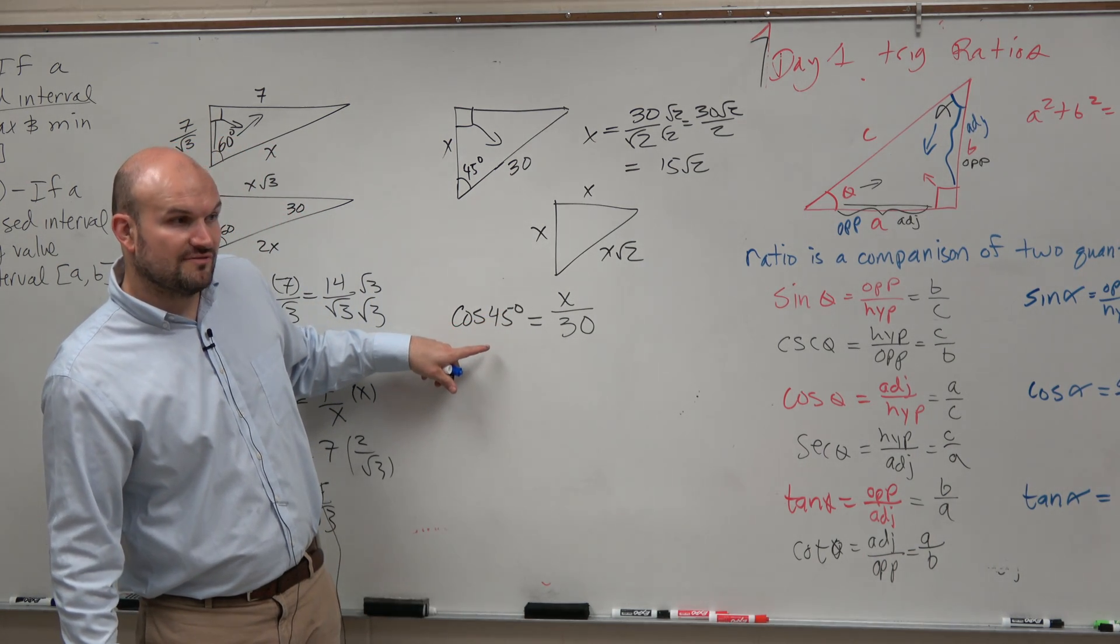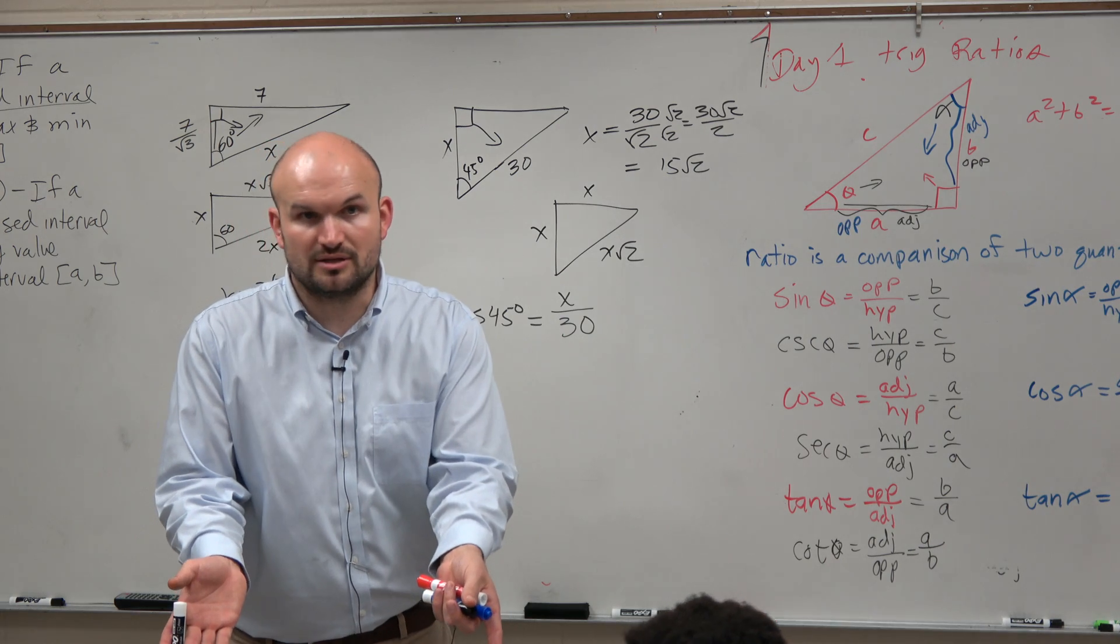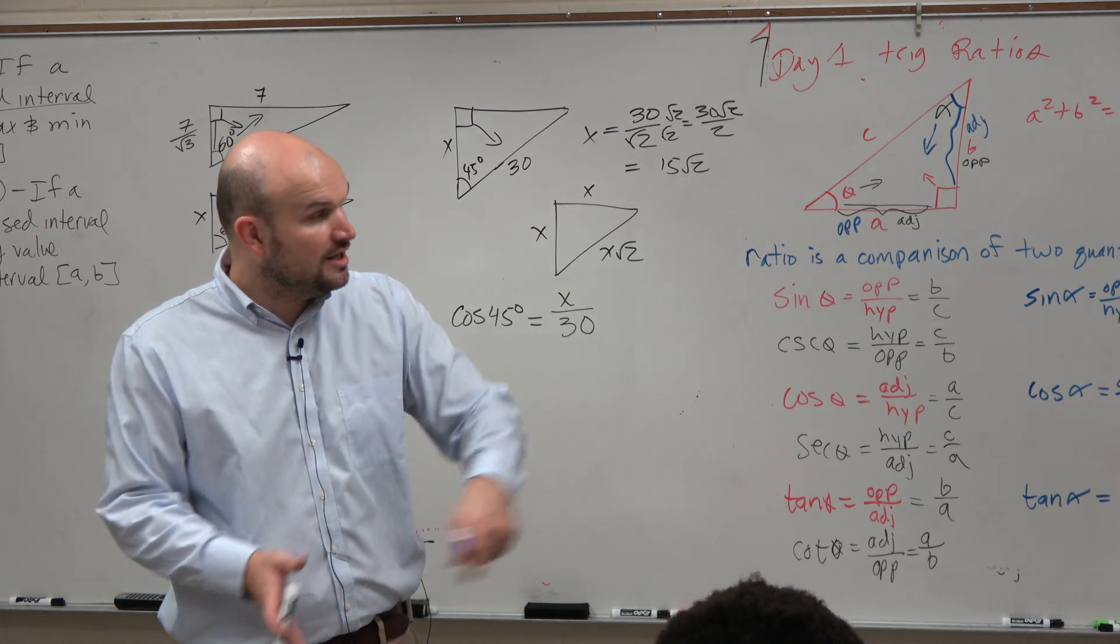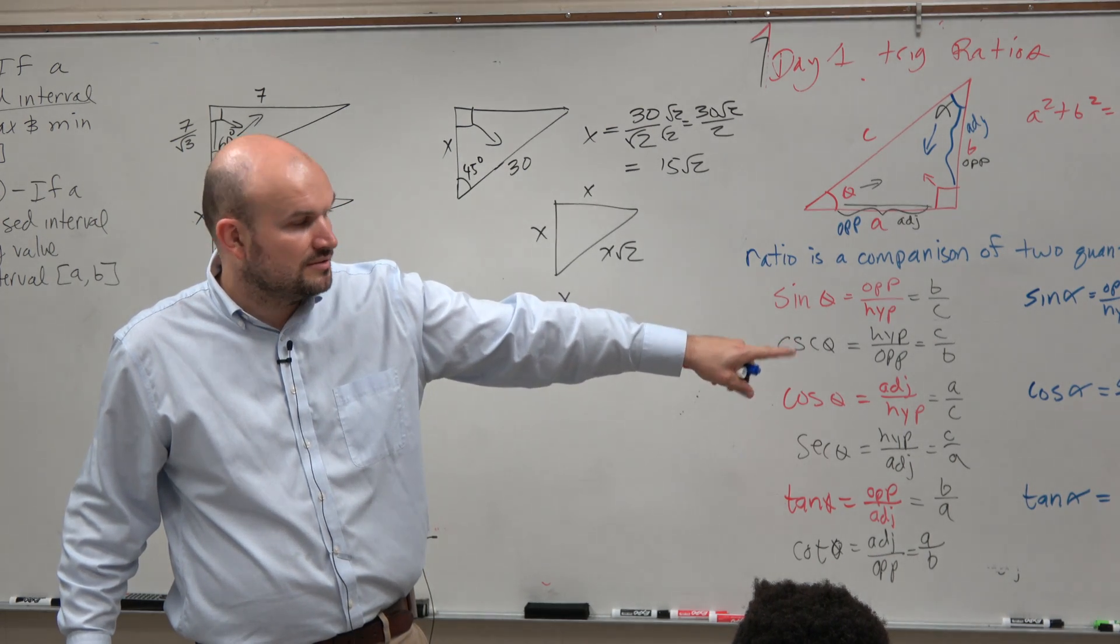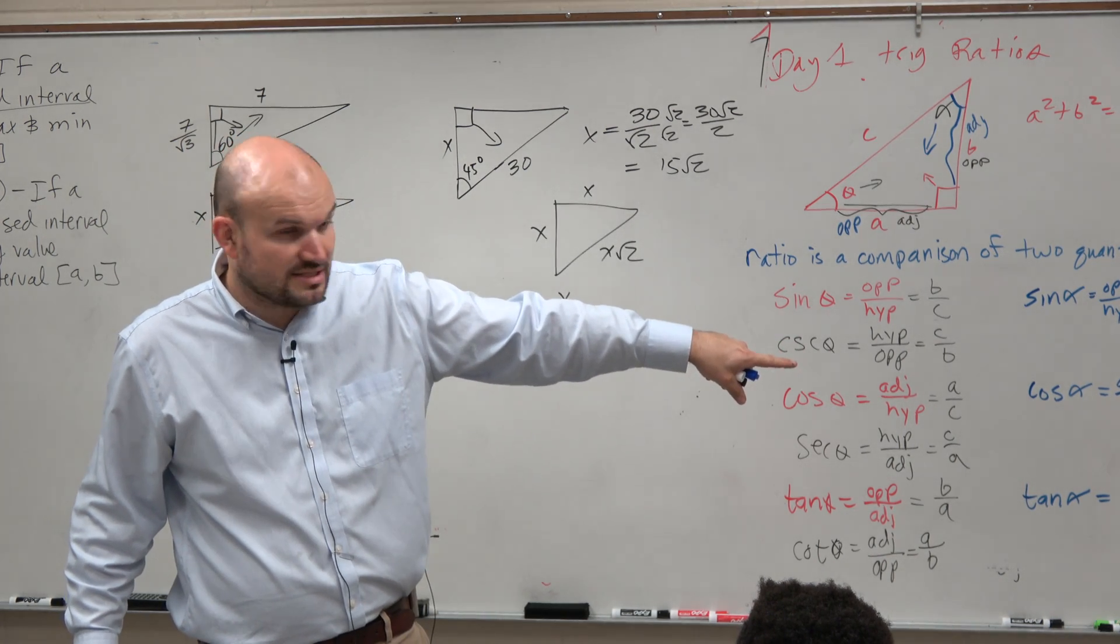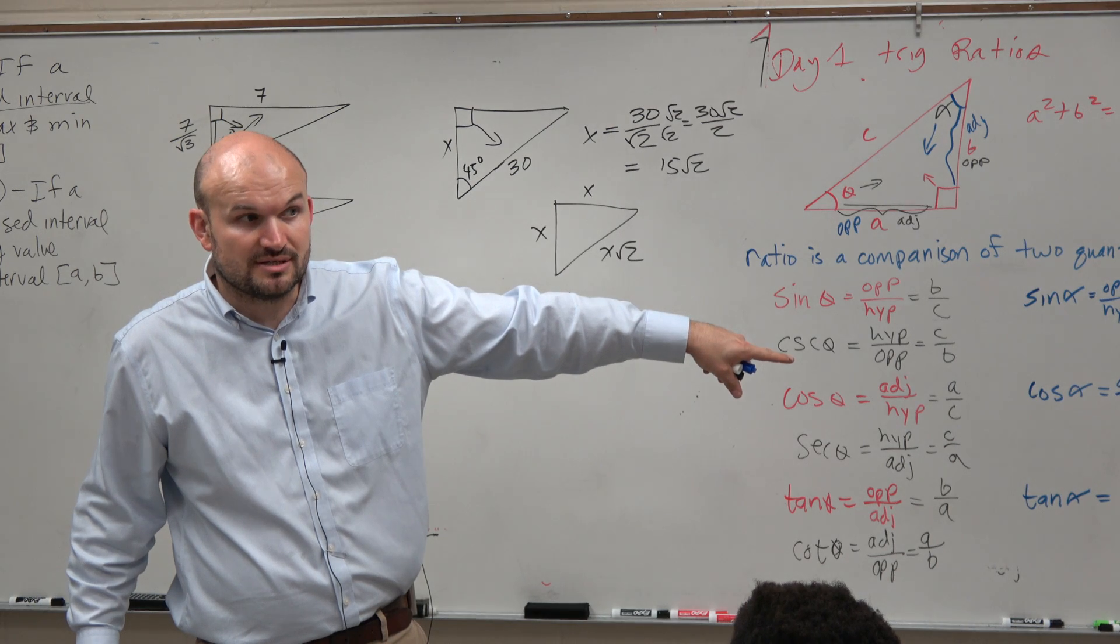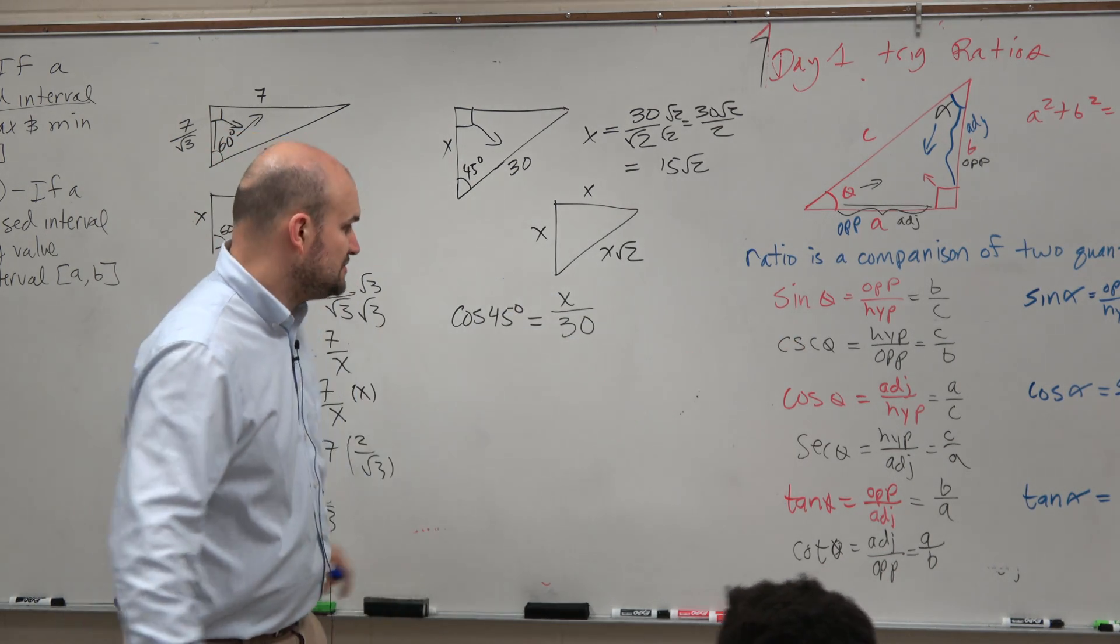So do we know what the cosine of 45 degrees is? I'll show you how to plug in your calculator, but we should not be plugging this into our calculator. Let's look at that unit triangle that I created. What is the cosine of 45 degrees? Square root of 2 over 2.